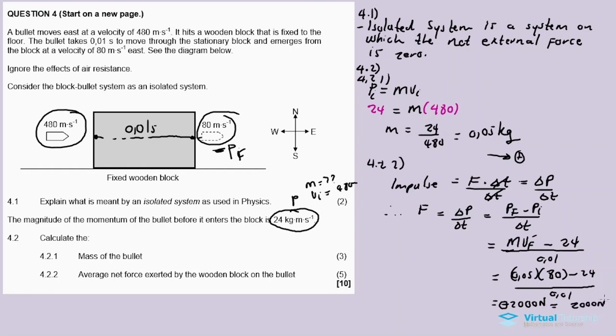The force exerted by the block is 2000 Newtons to the west. So the average net force exerted by the wooden block on the bullet is 2000 Newtons west. This concludes our video for today, question 4 momentum slash impulse. In the description box are links for other questions.